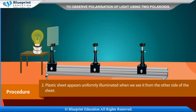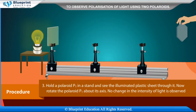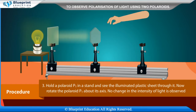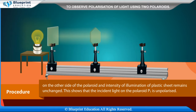The plastic sheet appears uniformly illuminated when we see it from the other side of the sheet. Hold a Polaroid P1 in a stand and see the illuminated plastic sheet through it. Now rotate the Polaroid P1 about its axis. No change in the intensity of light is observed, and the intensity of illumination of the plastic sheet remains unchanged. This shows that the incident light on Polaroid P1 is unpolarized.